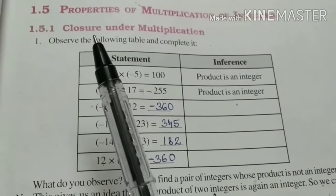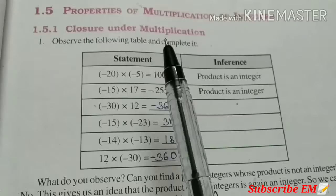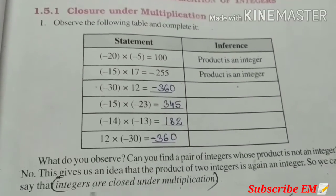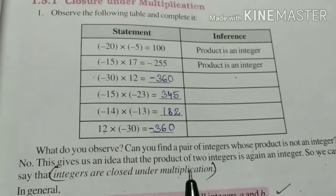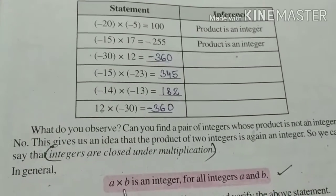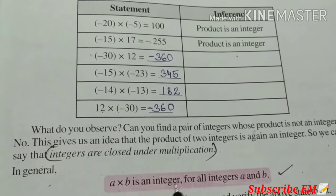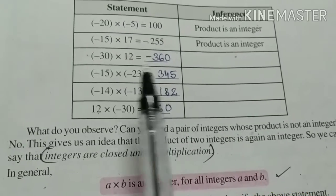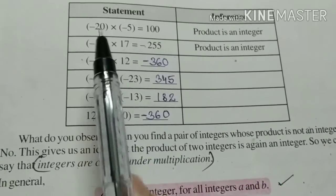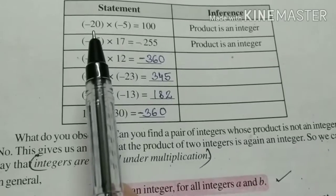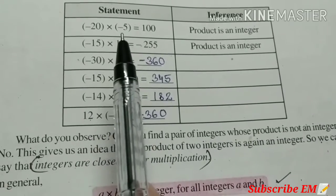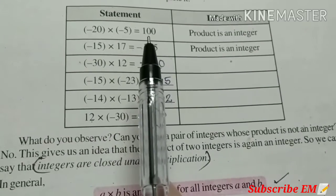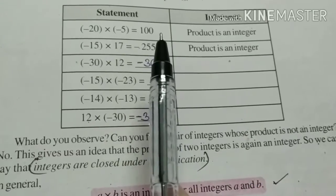First one, closure under multiplication. Integers are closed under multiplication. That means A into B is an integer for all integers A and B. Here you can see examples. Minus 20 into minus 5 equal to 100. It is an integer.